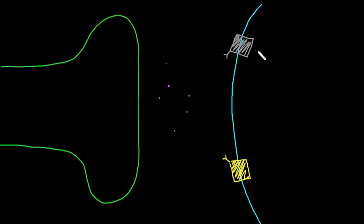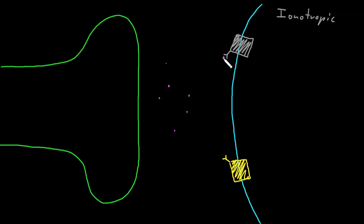The first type of neurotransmitter receptor is called ionotropic. Ionotropic neurotransmitter receptors are ligand-gated ion channels — ion is right in the name. When their ligand, in this case the neurotransmitter, binds to the receptor, they open and allow certain ions to pass. When the neurotransmitter leaves the receptor, they close and no longer let ions through. The ionotropic neurotransmitter receptors cause graded potentials when activated, which have a rapid effect on the potential of the nearby membrane that is brief and local.